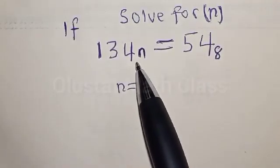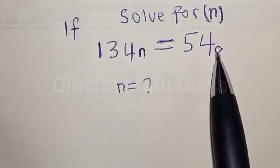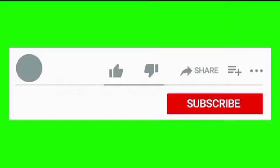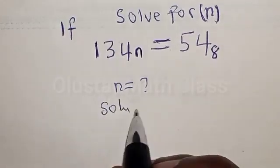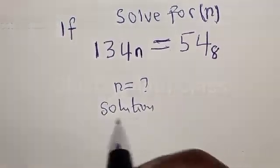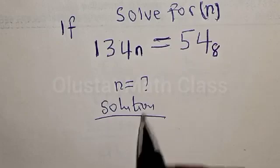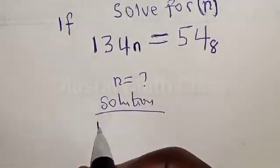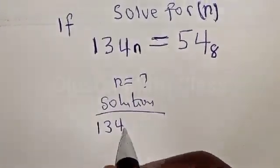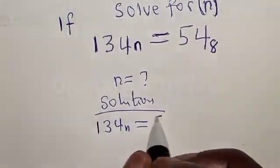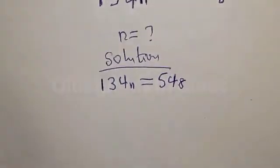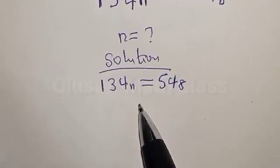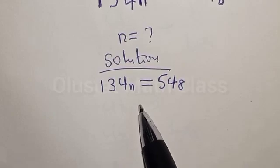We have 134 base n is equal to 54 base 8. What we need to do first is to convert the equation on both sides to base 10.